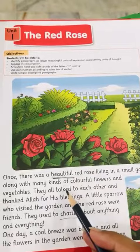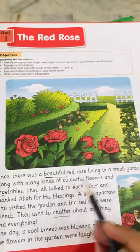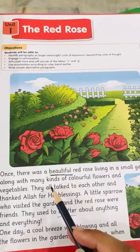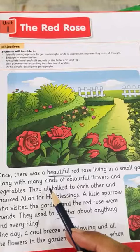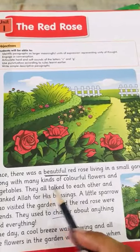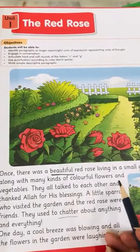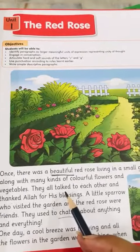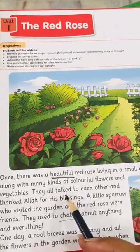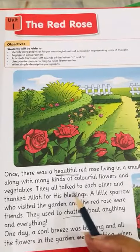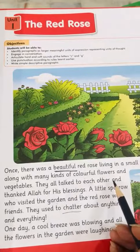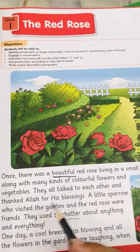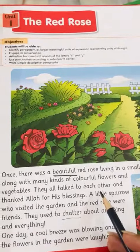In these lines, they have explained about a small garden where there are many different kinds of colourful flowers along with vegetables. They all talked to each other and thanked Allah for his blessing.